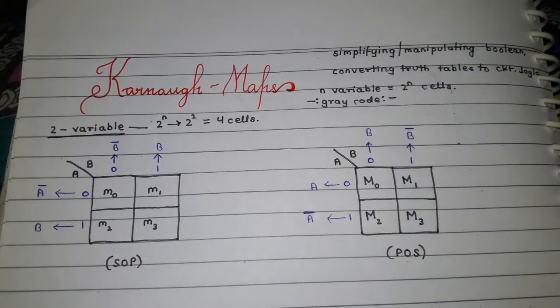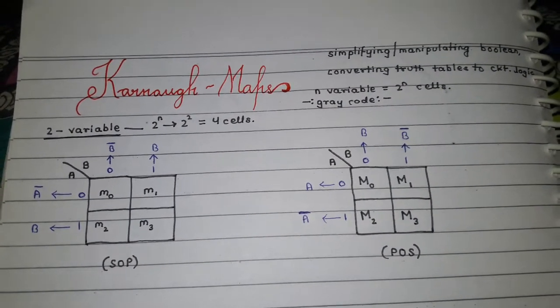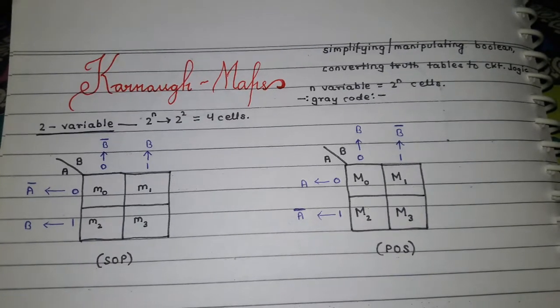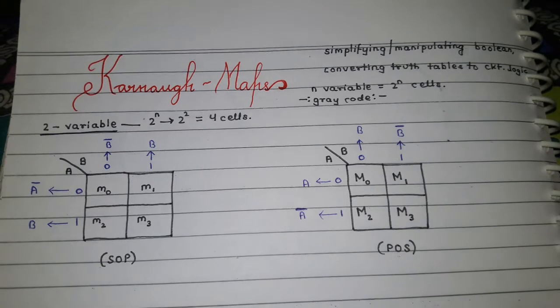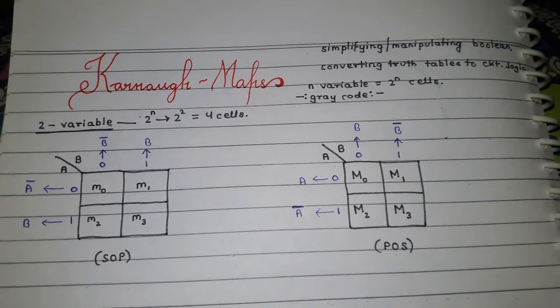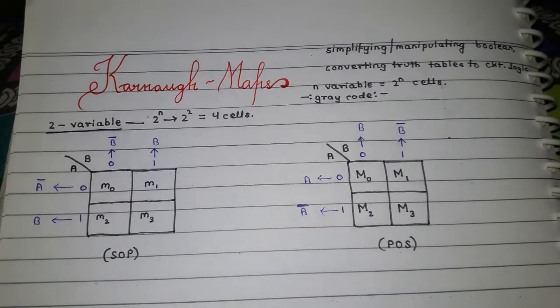Hello guys, today we'll be dealing with Karnaugh maps. Karnaugh maps is a method used for simplifying and manipulating Boolean equations. It's also used for converting truth tables into logic circuits.